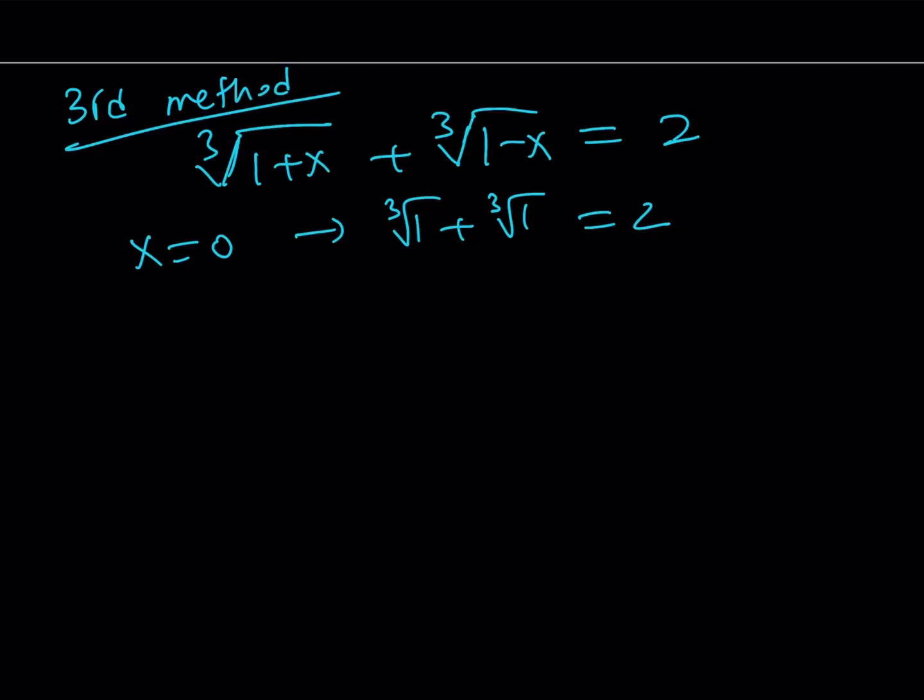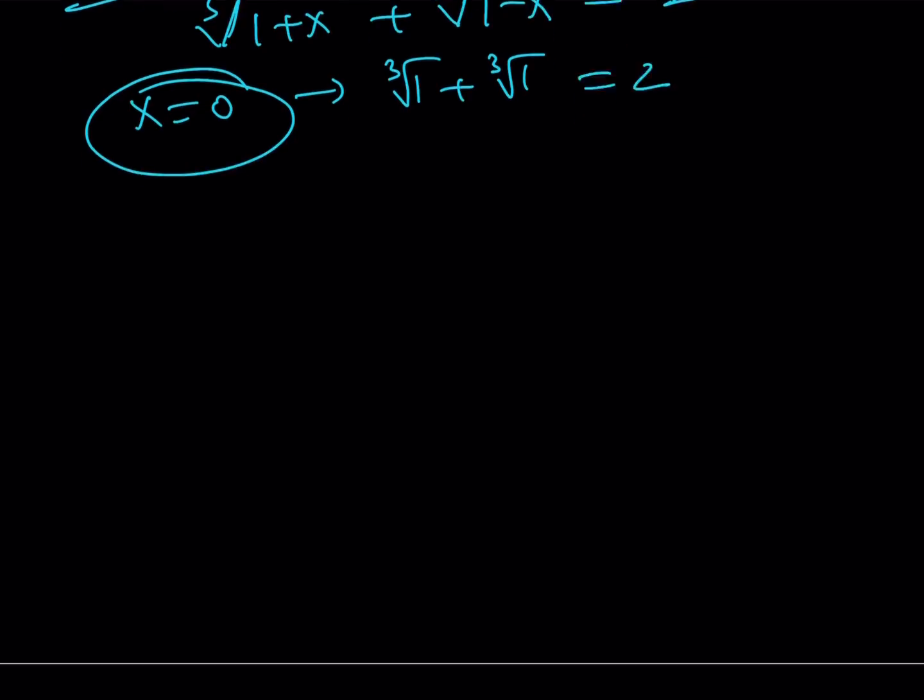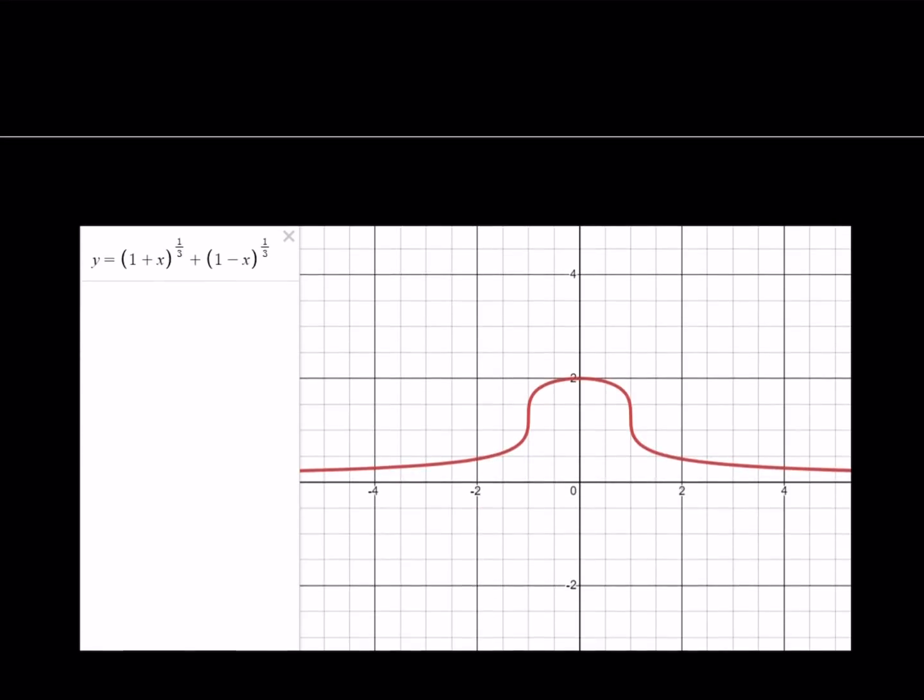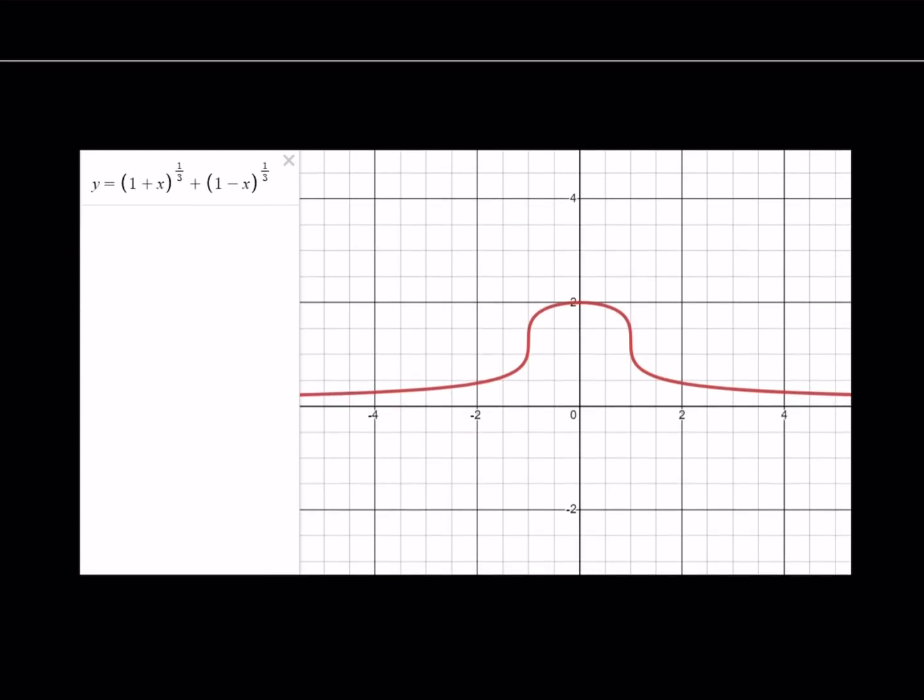So, here's the graph of our function. Unfortunately, Desmos doesn't allow us to write cube root. You have to write it as something to the power of one third. It's the same thing. You see kind of like an interesting shaped graph here because of the cube root. But notice that this is symmetrical. It means that if you replace X with negative X, the function is unchanged. Which means that this is actually an even function.